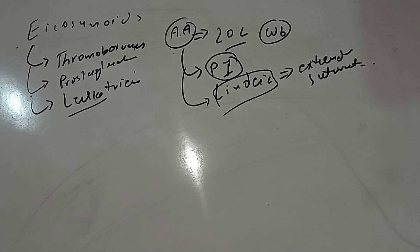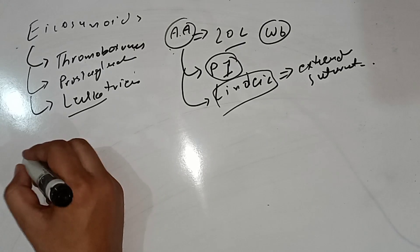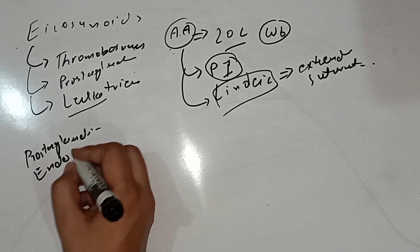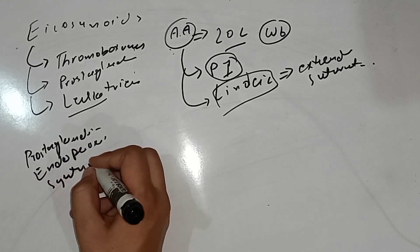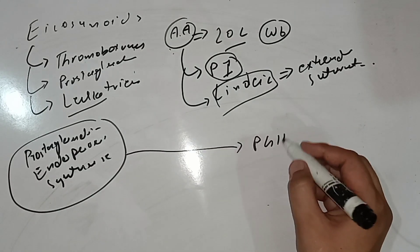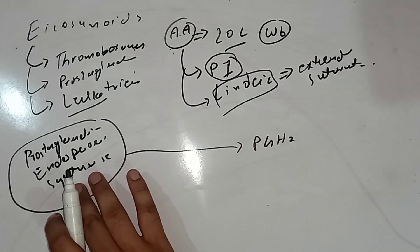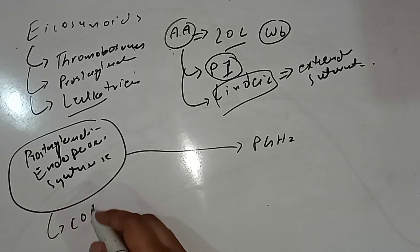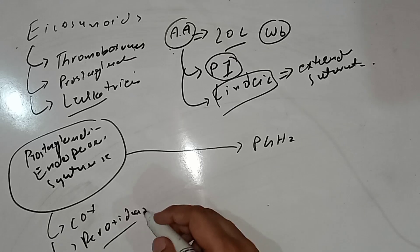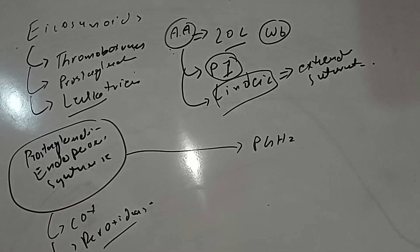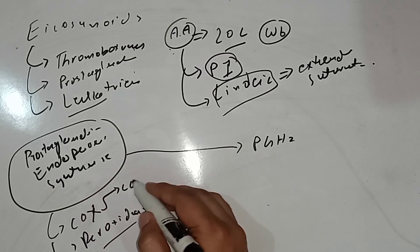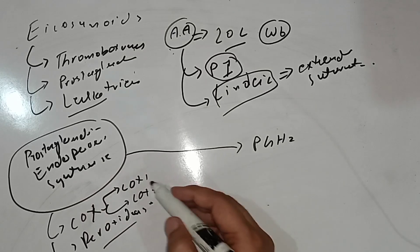To understand their synthesis, there is an enzyme called prostaglandin endoperoxide synthase, which is responsible for the synthesis of the parent prostaglandin PGH2. This enzyme has two activities: cyclooxygenase (COX) activity and peroxidase activity. It is a single protein with two enzymatic activities and is an endoplasmic reticulum-bound enzyme.